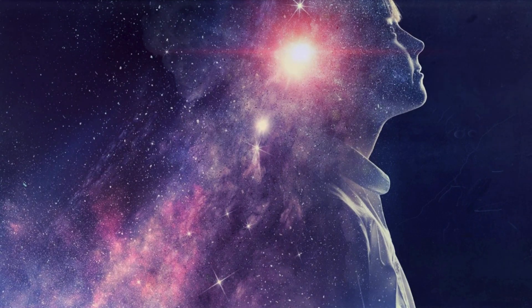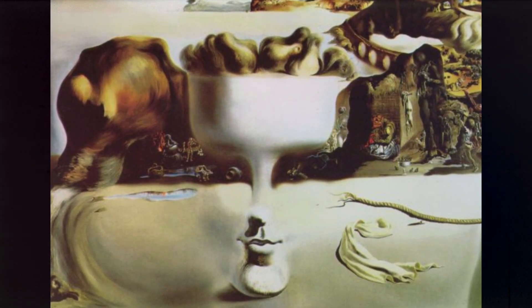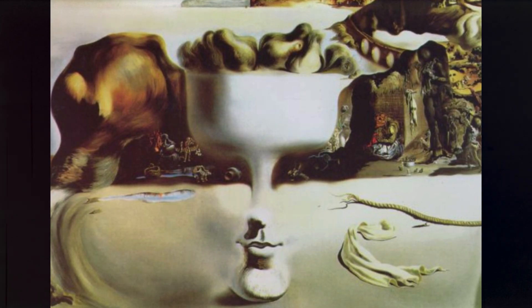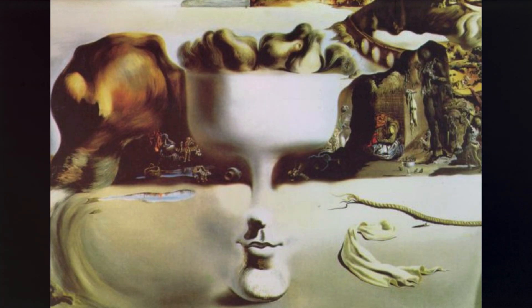Unlike Descartes, who divided reality into two distinct substances, mind and matter, Leibniz argued for a more unified vision, where even seemingly inert objects possessed some degree of perception. This led him to the conclusion that the universe itself is not just an arrangement of lifeless matter, but a realm of dynamic, self-contained entities unfolding according to a logical order.